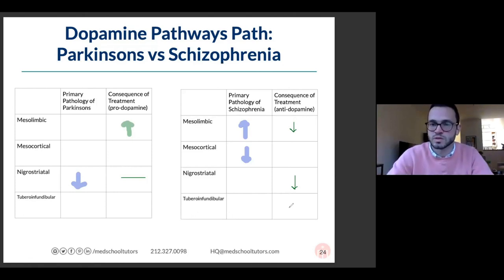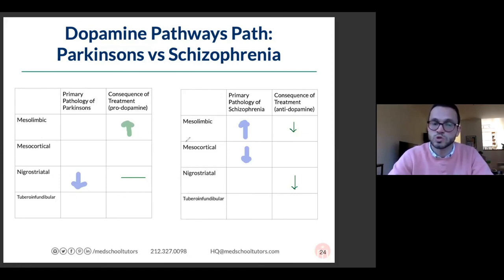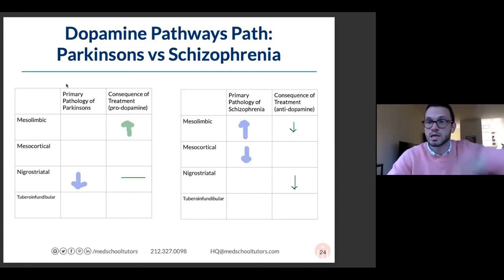Another clinical correlate: if someone has a pituitary adenoma producing prolactin, you treat them with dopamine agonists — cabergoline, bromocriptine, pramipexole — the same ones used for Parkinson's — to inhibit prolactin production from the tumor.